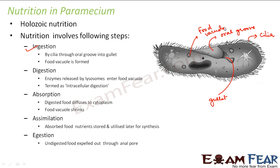The next step is digestion. Enzymes released by lysosomes enter the food vacuole — this is again called intracellular digestion. Lysosomes release enzymes that enter the vacuole and break down the complex food into simpler molecules. For absorption, the digested food diffuses out into the cytoplasm and the food vacuole shrinks. Once the content of the food vacuole is emptied, the vacuole shrinks and the digested food remains in the cytoplasm.